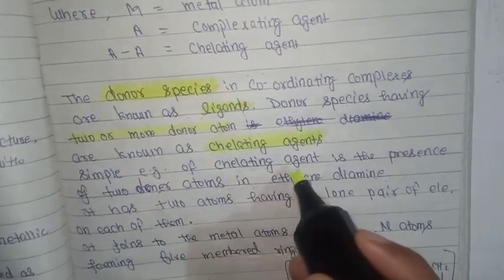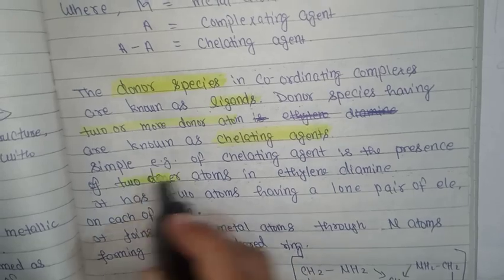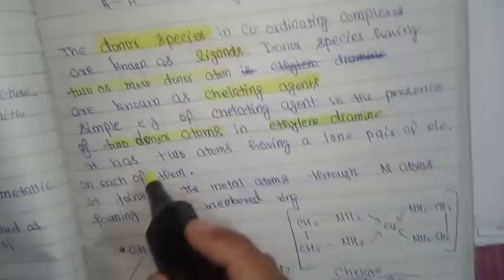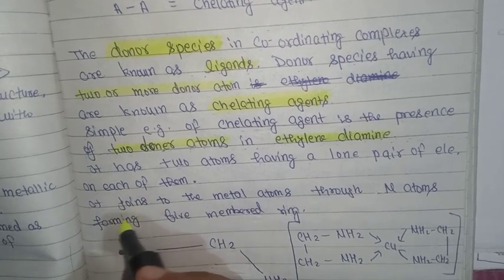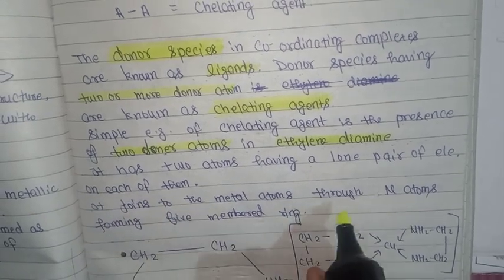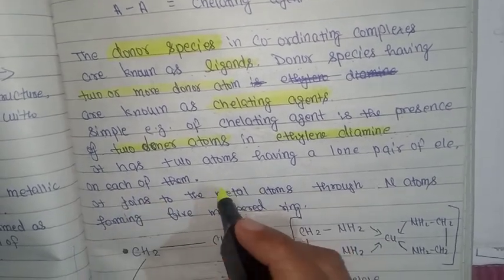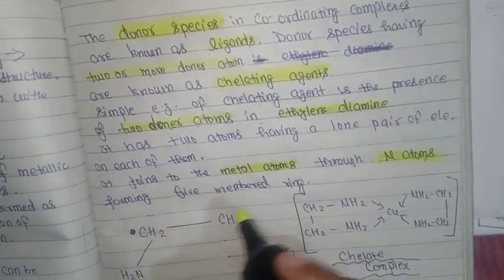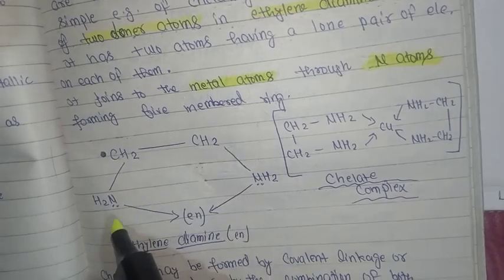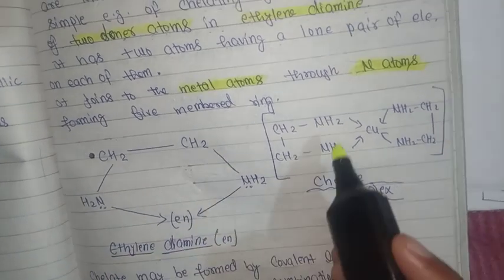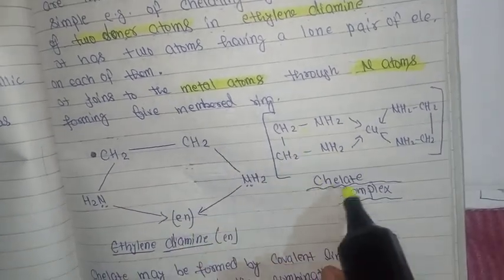Simple example of chelating agent is the presence of two donor atoms in ethylene diamine. It has two atoms having a lone pair of electrons on each of them. It joins to metal ion through nitrogen atom forming a five-member ring. CH2-CH2 with NH2 groups, this is ethylene diamine. This is our complex chelate.